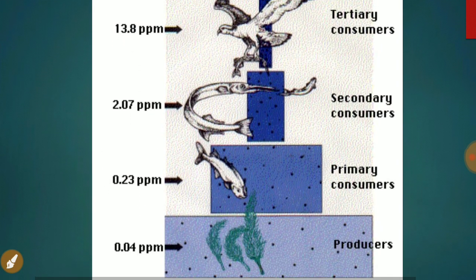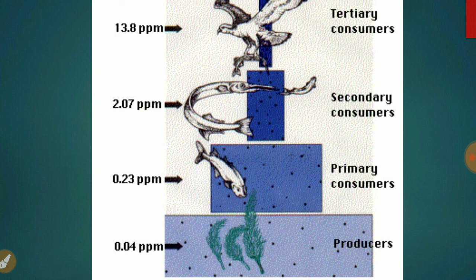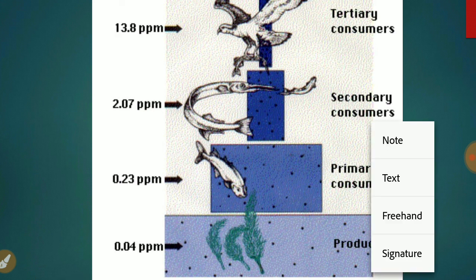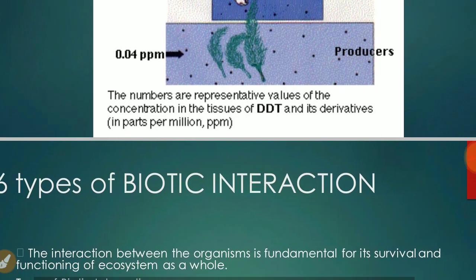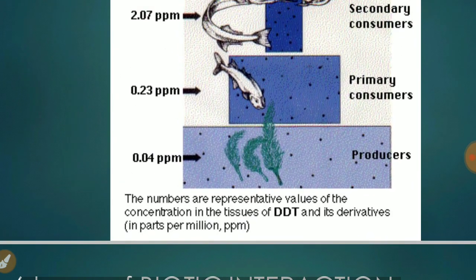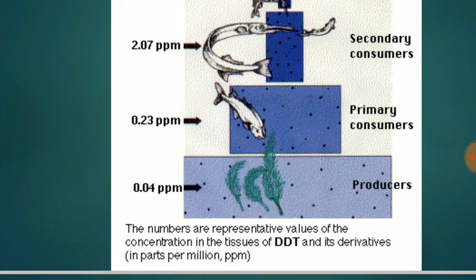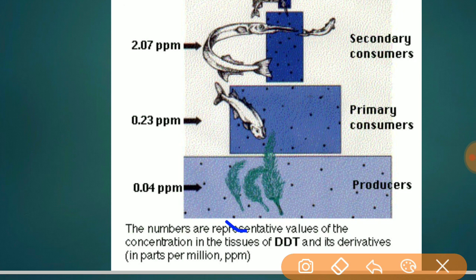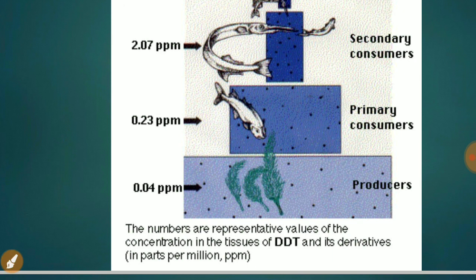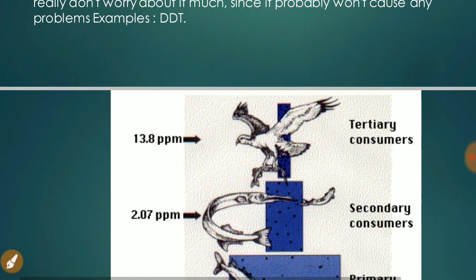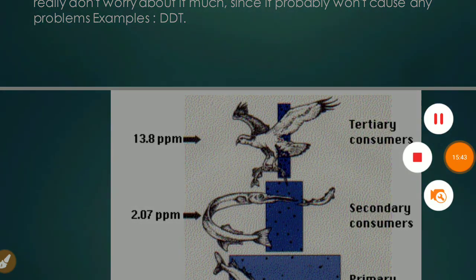Here is an example showing representative values of DDT and its derivatives concentration in the tissue of organisms across trophic levels. We will be back with the second part of this chapter on functions of an ecosystem. Thank you, class.